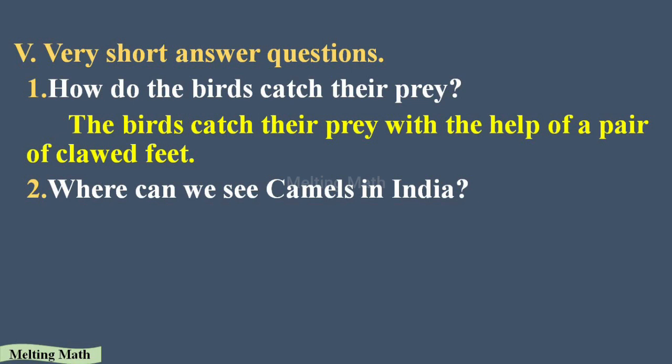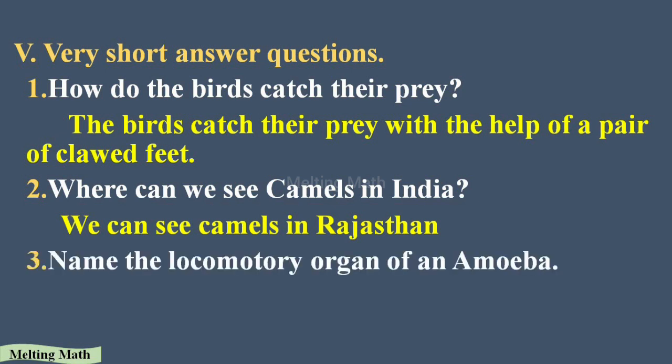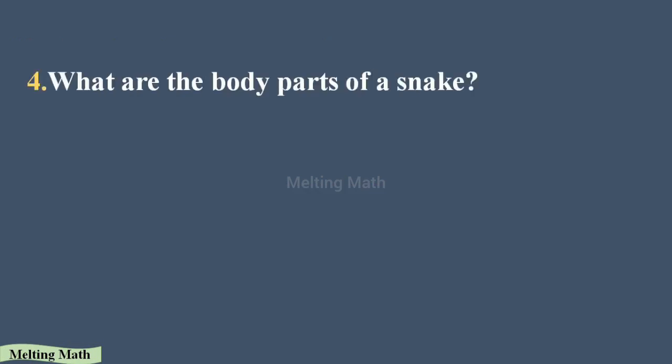Very short answer question two: where can we see camels in India? We can see camels in Rajasthan, which is a desert region. Question three: name the locomotory organ of the amoeba. Locomotory means movement — just as we move with the help of legs, amoeba moves with the help of pseudopodia. The locomotory organ of amoeba is called pseudopodia.